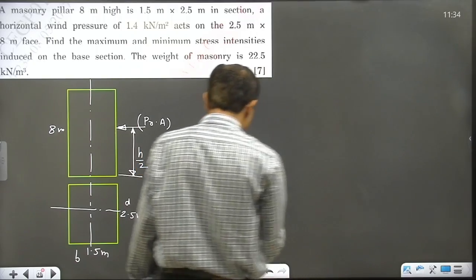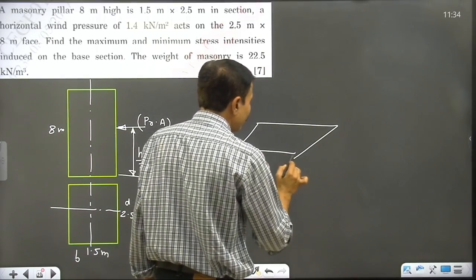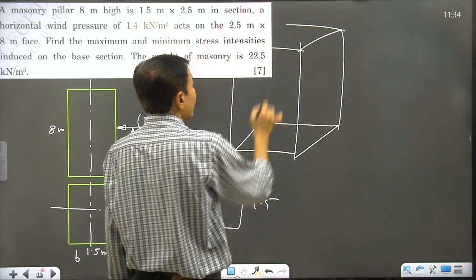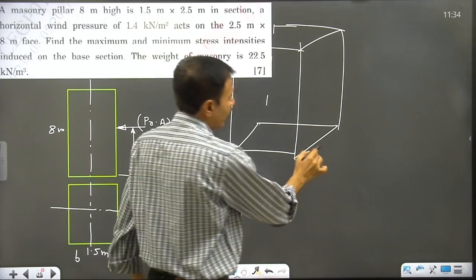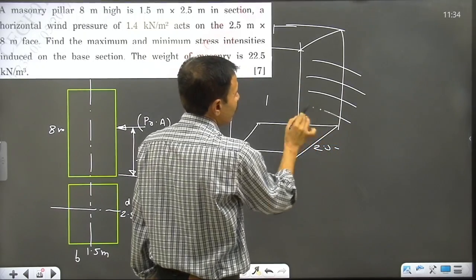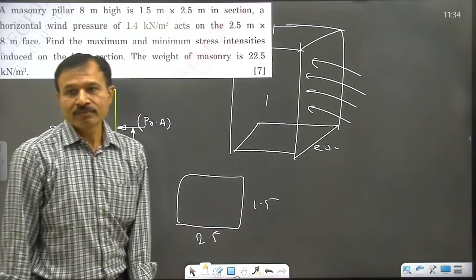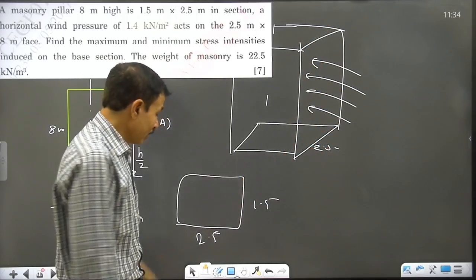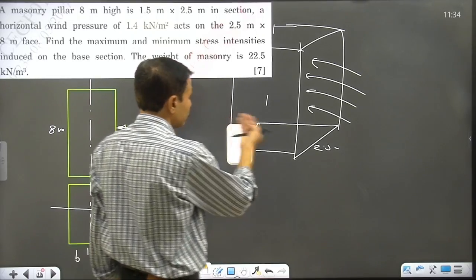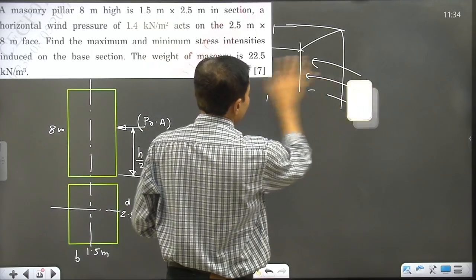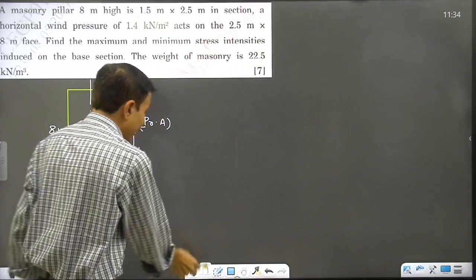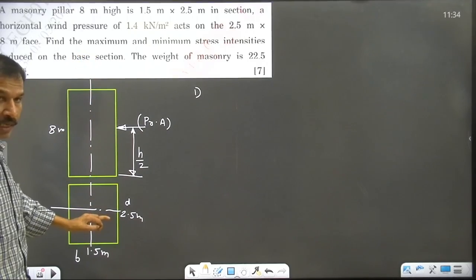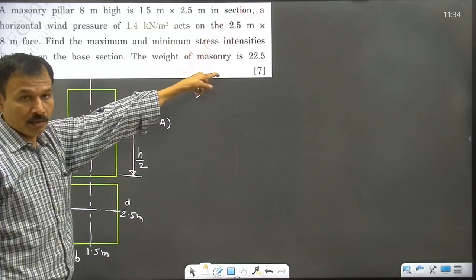The figure shows a 2.5 meter dimension. The wind pressure force is applied over the 2.5 meter by 8 meter surface area.